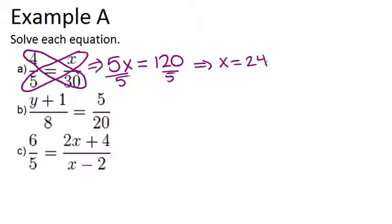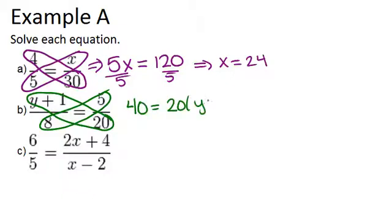In part B, we can do the same thing. Even though there's a y plus 1, not just one number there, you can still cross-multiply. So you'll be doing 20 times y plus 1 equals 5 times 8. Well, 5 times 8 is 40, and that's going to equal 20 times y plus 1.